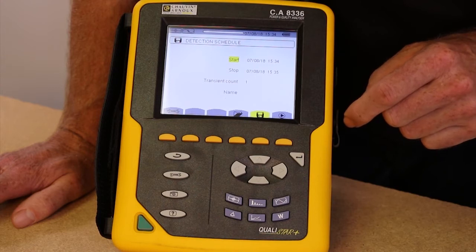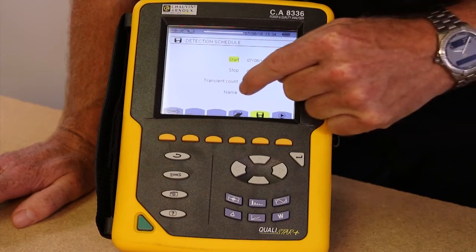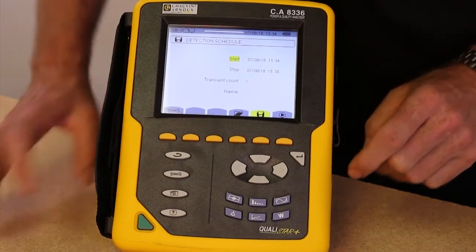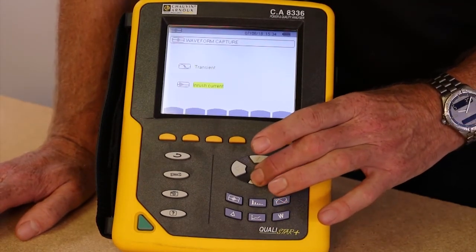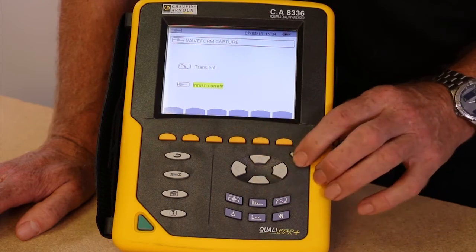At the bottom here, we're also able to give the recording a name. Selecting inrush current, we can do exactly the same as we just did on the transient screen.